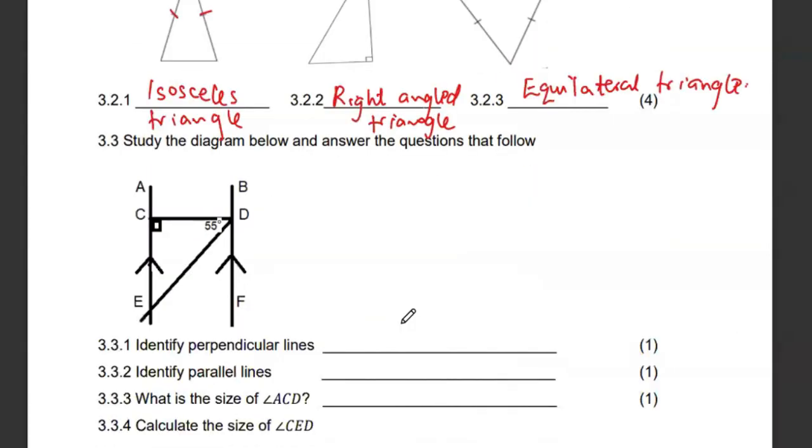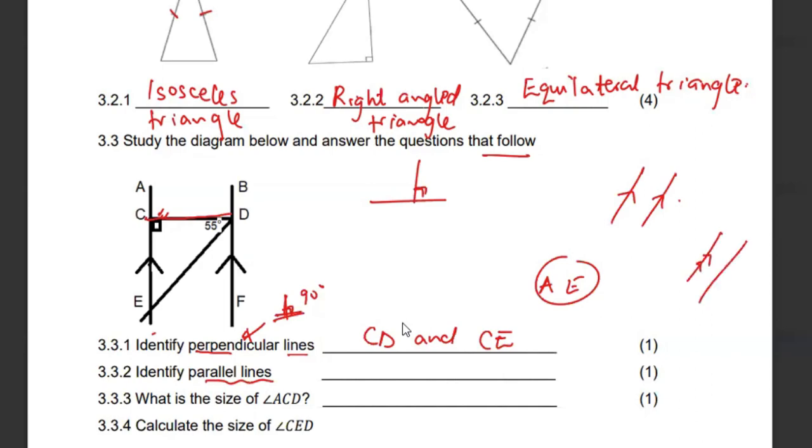Then 3.3, study the diagram below and answer the questions that follow. Identify the perpendicular lines. We know that perpendicular lines simply means that those lines are forming a 90 degree. They are meeting at 90 degrees. The symbol for 90 degrees is basically that small square box, meaning that we have it here. So this line CD and then the line CE. The line CE can also be extended up to A and you can say AE. Then identify the parallel lines. We know that parallel lines are basically lines that never meet. And we normally use arrows to represent those lines. It could be a single arrow or a double arrow, even a triple arrow. So those lines are this line AE and this line BF.